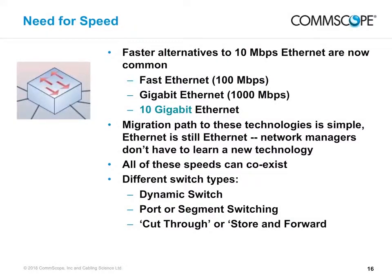During this presentation, we talk about basic 10 Mbps Ethernet technology. But as LANs have merged into enterprise internetworks, their speed has also increased. 10 Mbps is now superseded by faster developments such as Fast Ethernet, Gigabit Ethernet, and 10G Ethernet. These are all derivatives of 10 Mbps Ethernet — the technology is basically the same, they work in the same way, and can all coexist on a suitable network infrastructure. The migration path to these technologies is simple; Ethernet is still Ethernet, and network managers don't have to learn a new technology.